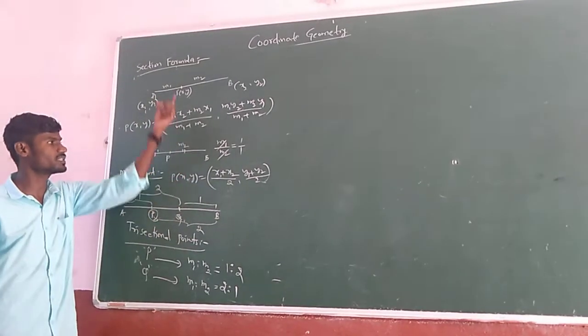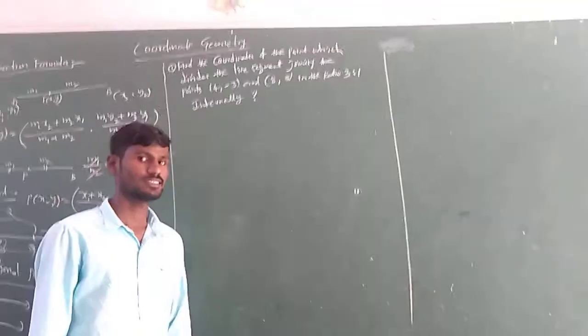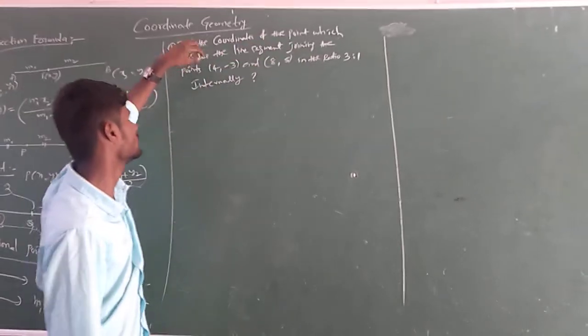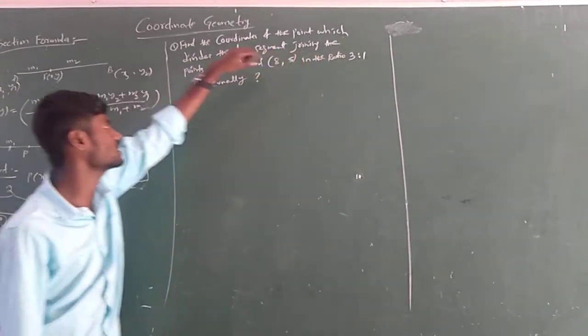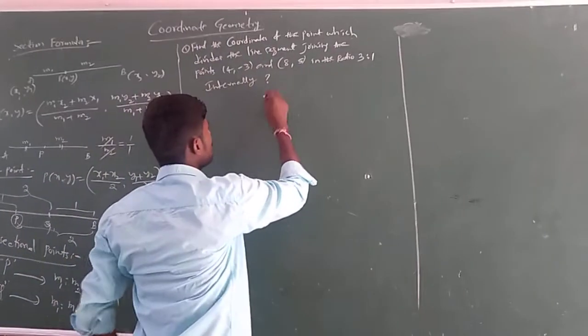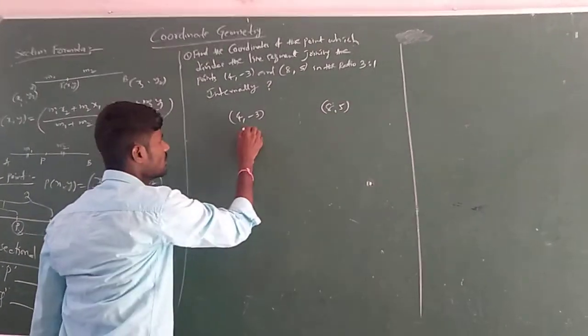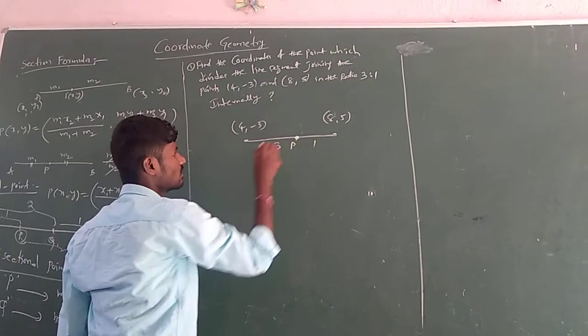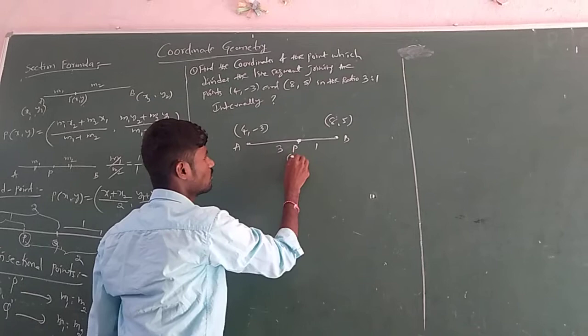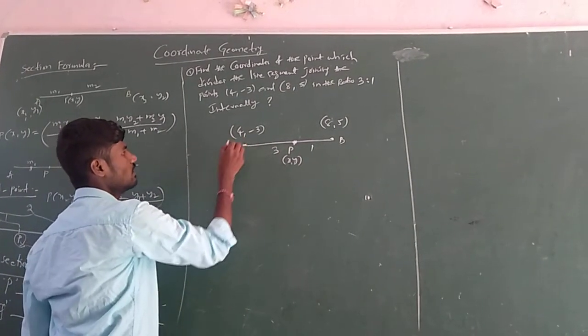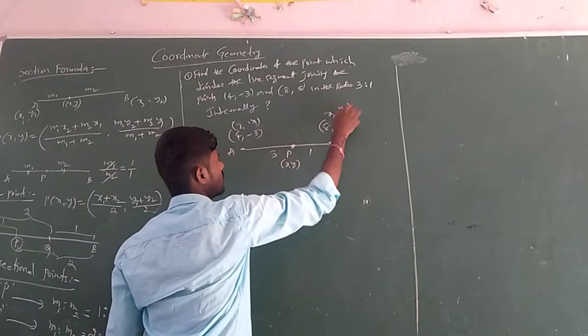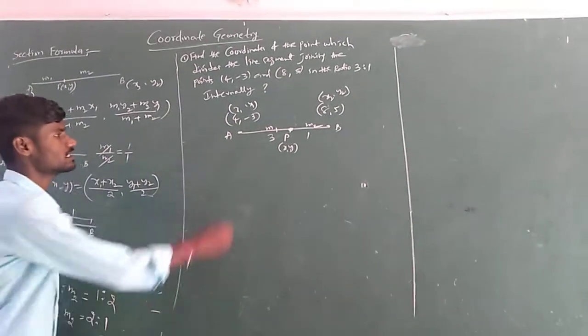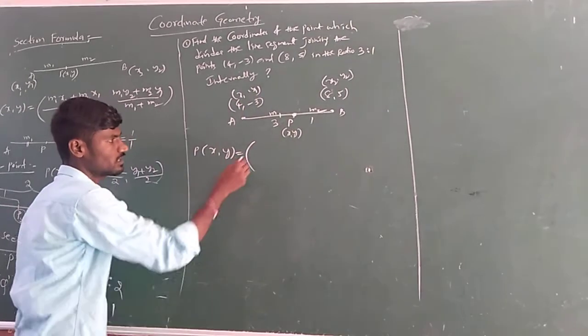So in today's class, we are going to solve the problems based upon these 3 types of problems. So let us enter into the problem. See students, here one problem based upon section formula. Find the coordinates of the point which divides the line segment joining the point 4, minus 3 and 8, 5 in the ratio 3 is to 1 internally. Means here two points, 4, minus 3 and another point 8, 5. The line joining between these two points is divided in the ratio of 3 is to 1. Means some 3 parts and another part. So what is this point is the question. If we take this point as P, the given points as A and B, we have to find P of X, Y. Then we will take it as X1, Y1 and it is X2, Y2, second point. And the given ratio, we will take it as M1 and M2. Means M1 is to M2 is 3 is to 1. So by the section formula, we can get P of X, Y.